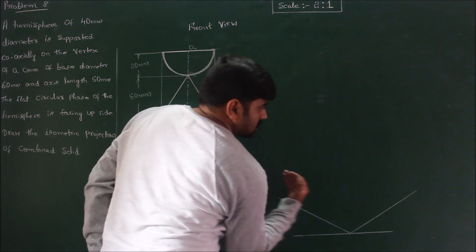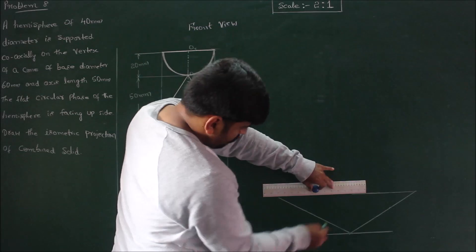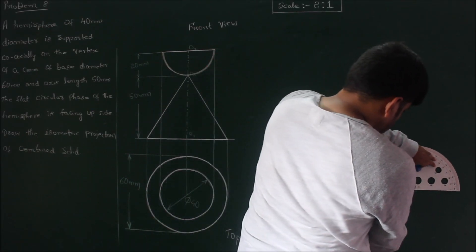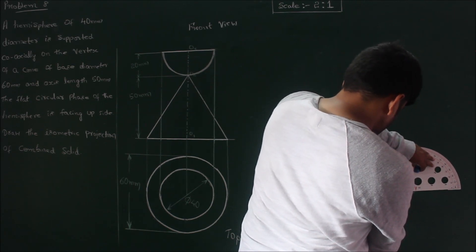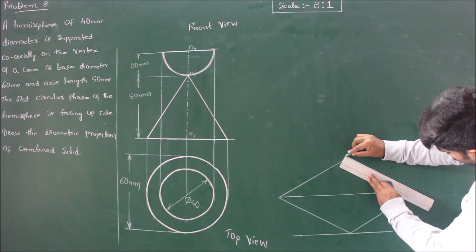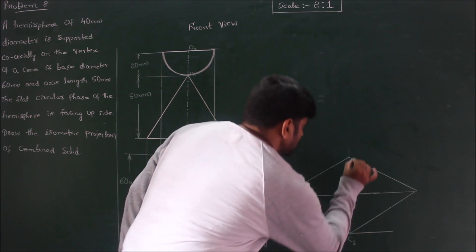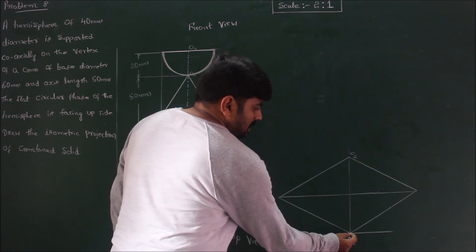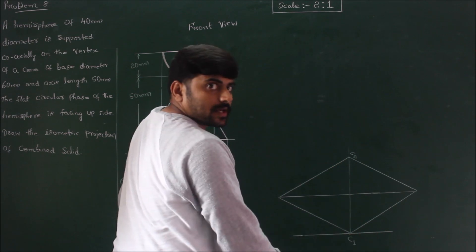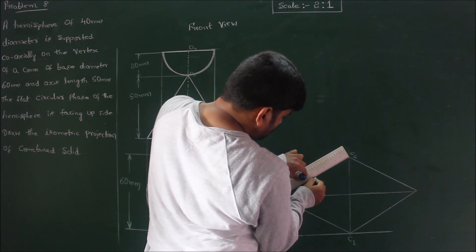Draw parallel lines to complete the isometric projection of the square of side 60 mm × 60 mm. Now mark centers C1 and C2. To construct the circle by the four-center method, draw the perpendicular bisectors from corner C1 and corner C2. Identify the center on all four sides by choosing 3 boxes on each of the four sides.